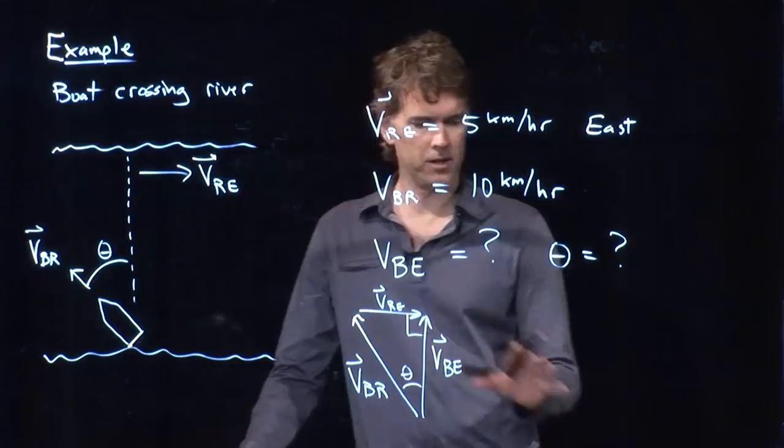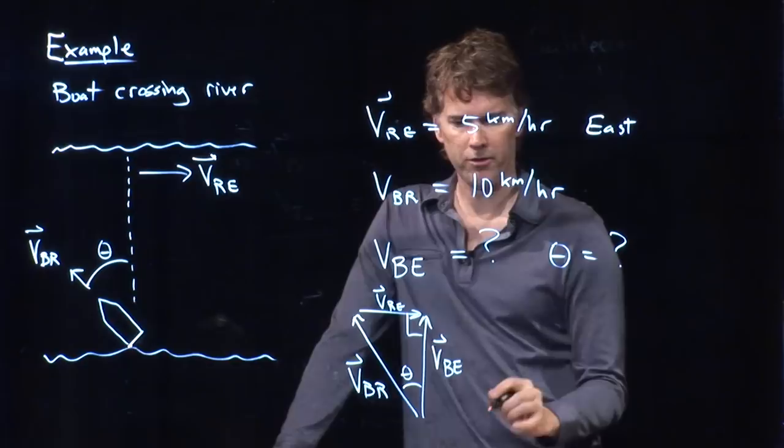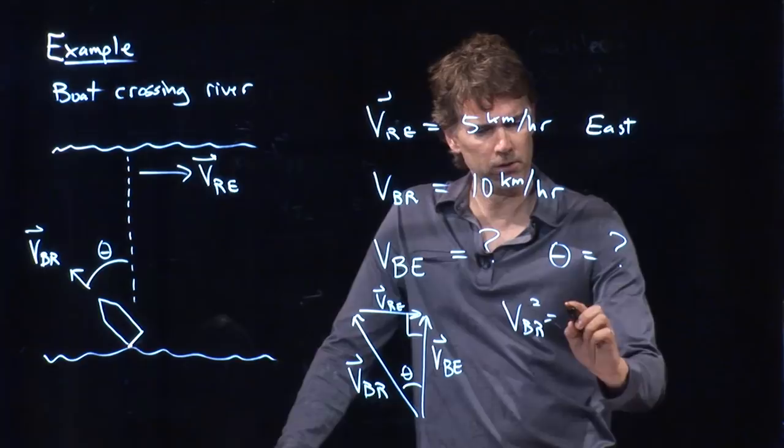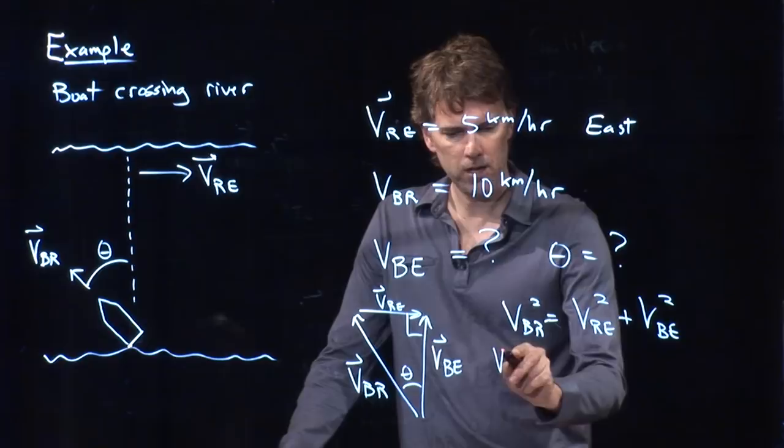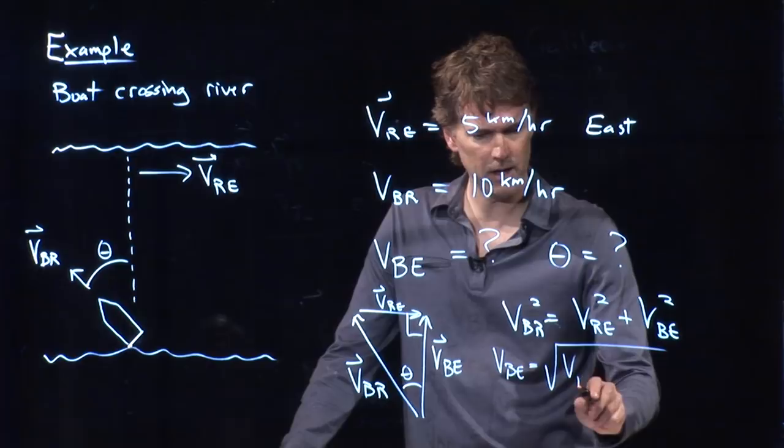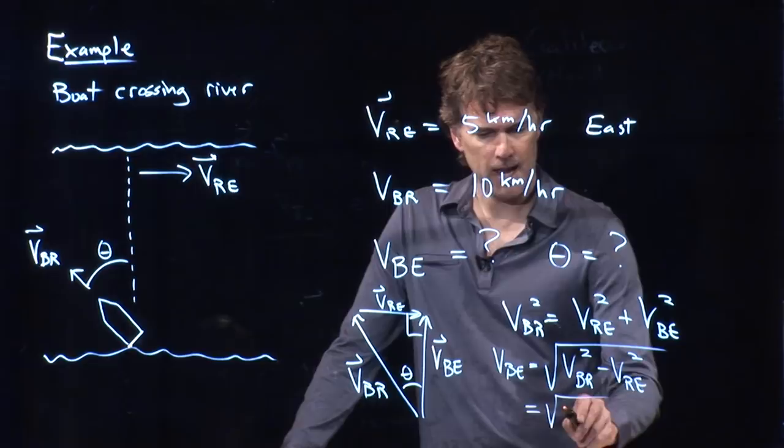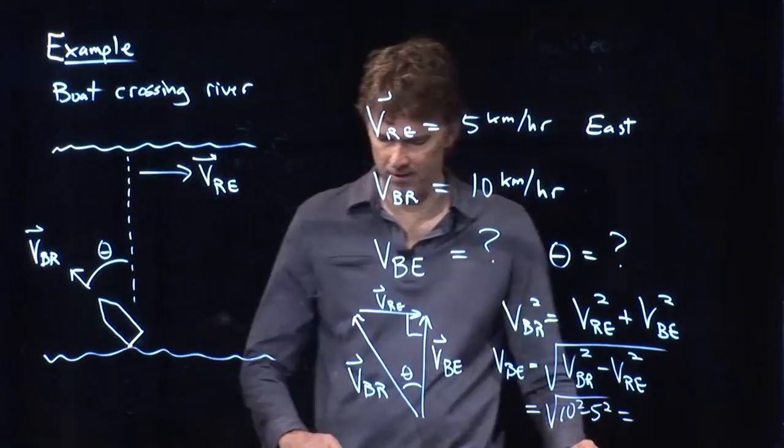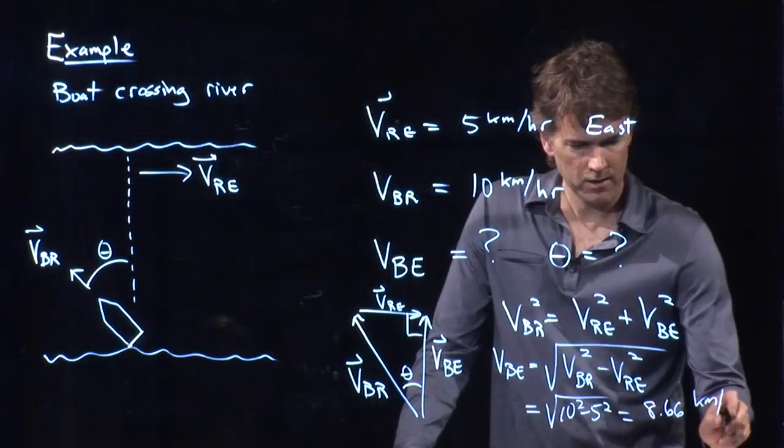And now look, we've drawn a triangle. We know that Pythagoras holds for this right triangle. We've got a 5, we've got a 10. We can solve this for VBE. VBR squared equals VRE squared plus VBE squared. And now we can solve this for VBE. VBE equals square root of VBR squared minus VRE squared. And we know all those numbers, right? We've got 10 squared, we're going to subtract 5 squared. That's the square root of 75. And we did this earlier, square root of 75 was 8.66 kilometers per hour. All right, so that's the first part.